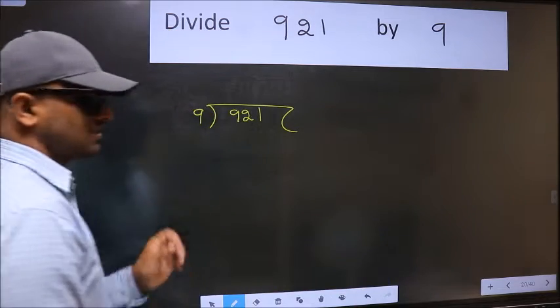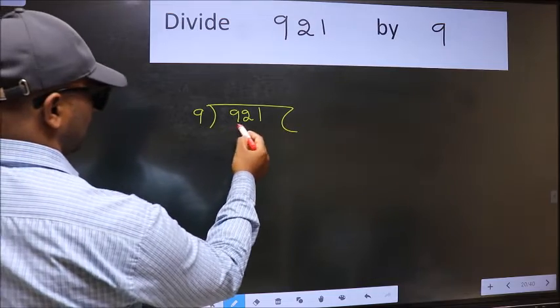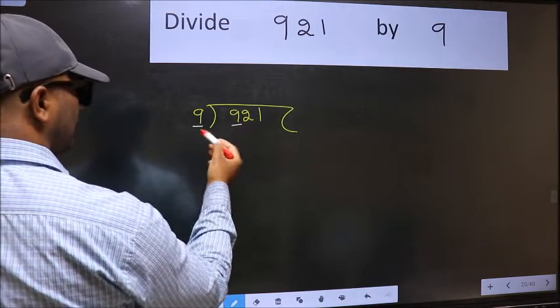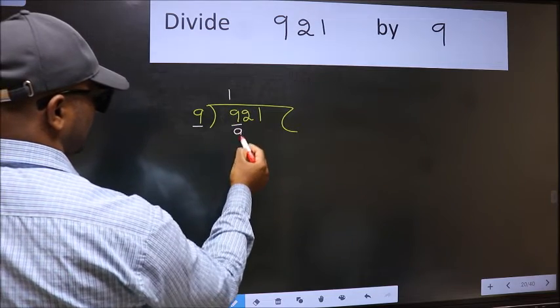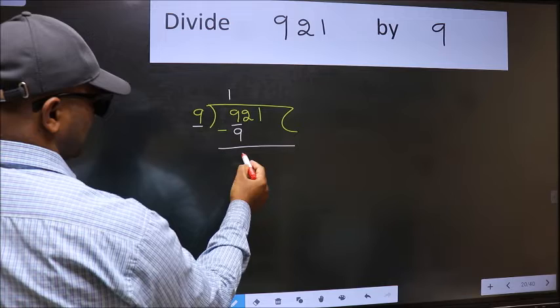This is your step 1. Next, here we have 9 and here 9. When do we get 9 in the 9 table? 9 times 1 is 9. Now we should subtract. We get 0.